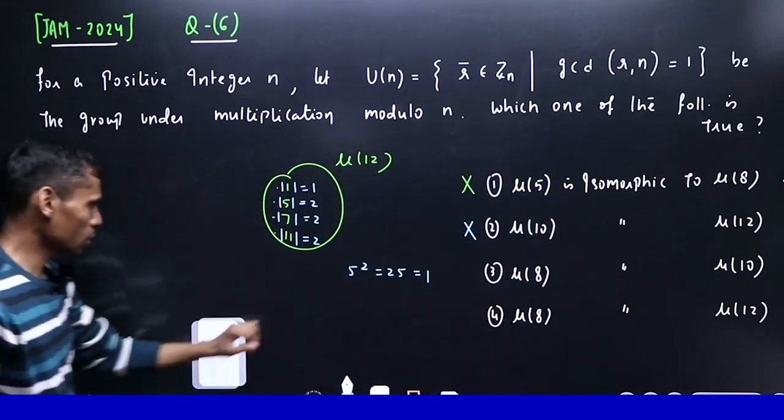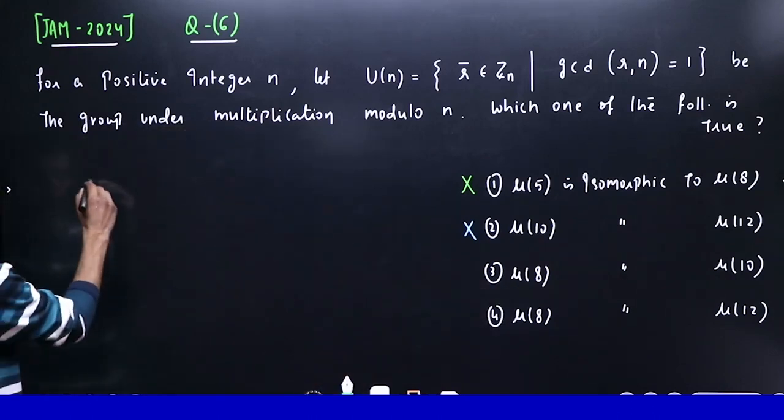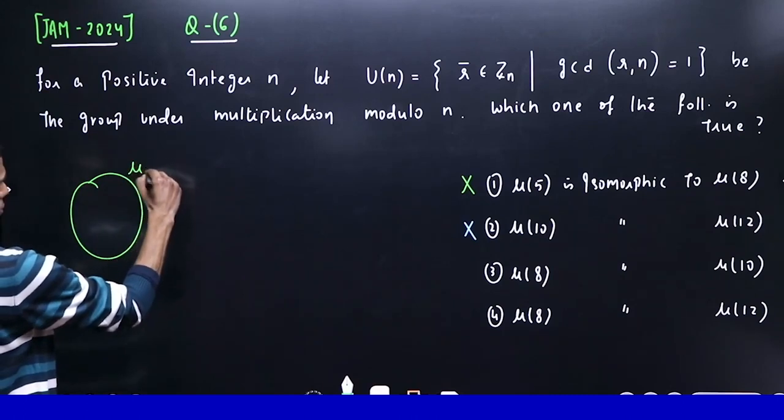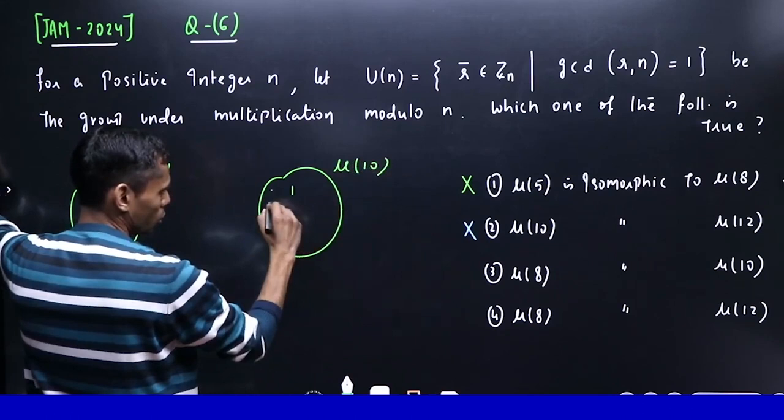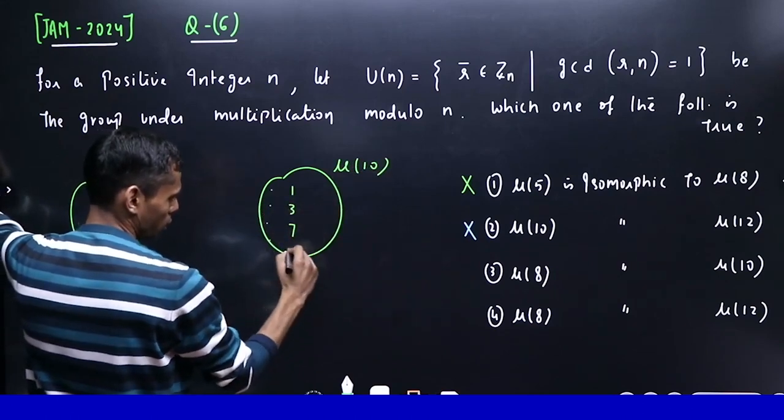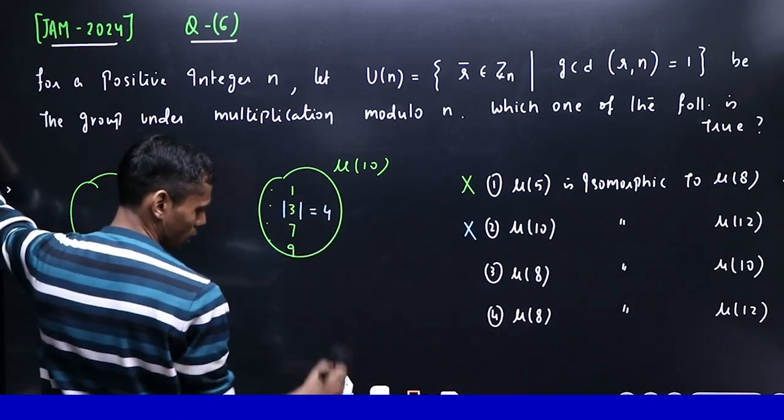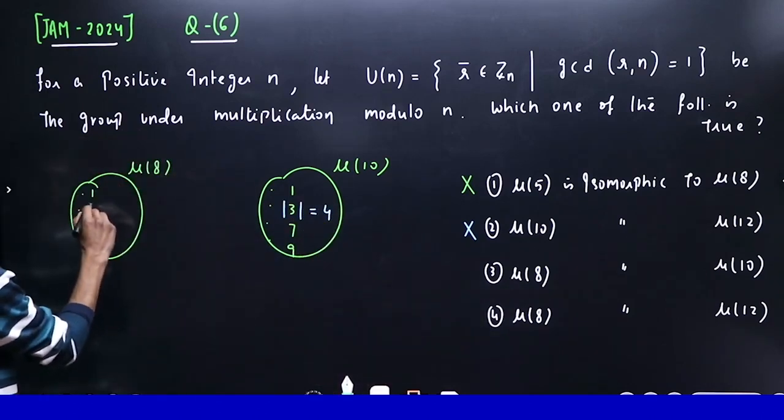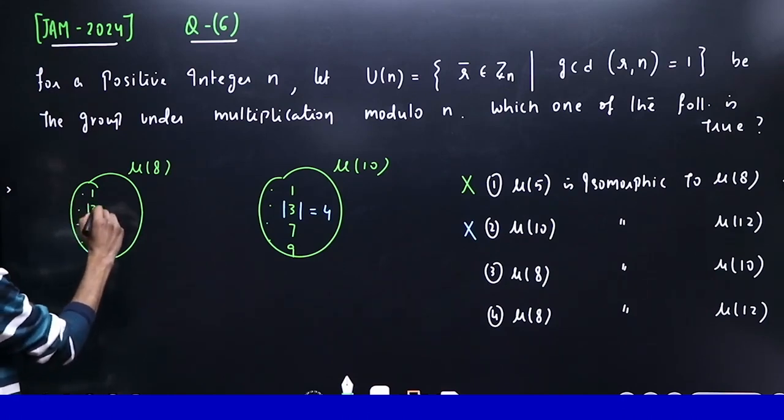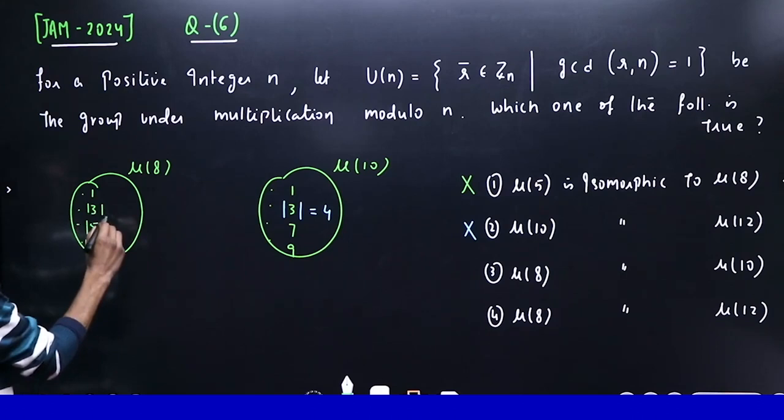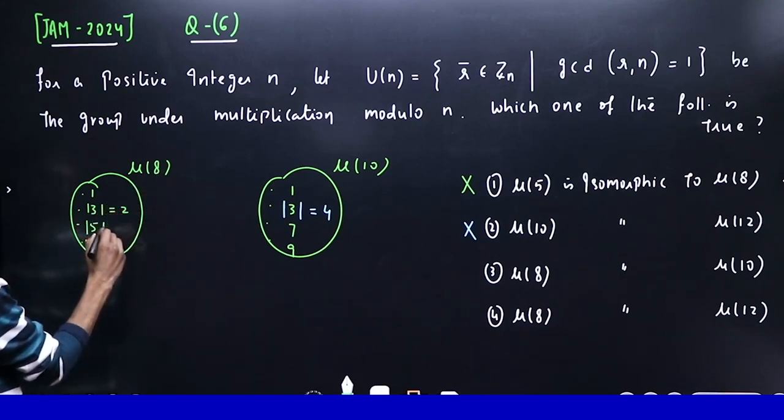Next step: μ(8) and μ(10). We already worked on this - μ(10) has 1, 3, 7, 9, and we know its order is 4. Now in μ(8): it has 1, 3, 5, 7. Same problem: 3² is 9, modulo 8 is 1, so its order is 2. 5² is 25, modulo 8 is again 1, so its order is also 2.